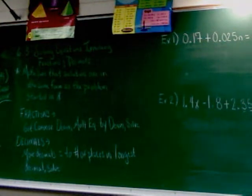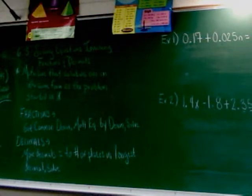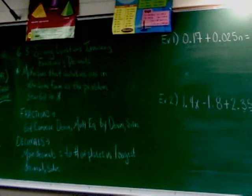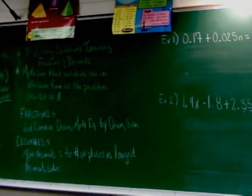Let's start with decimals, because decimals are a little bit easier than fractions to work with. In example one, I have 0.17 plus 0.025n equals 0.11 plus 0.041n.